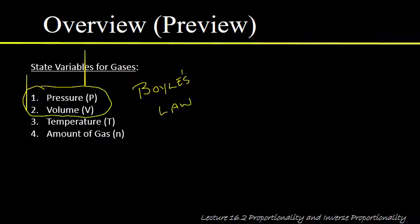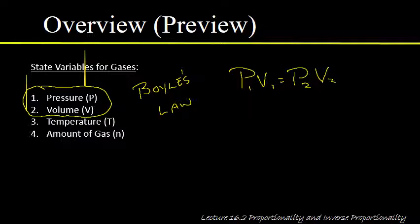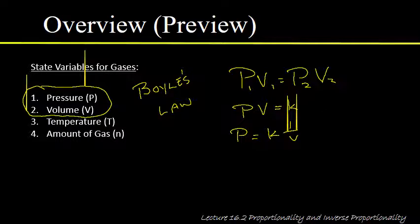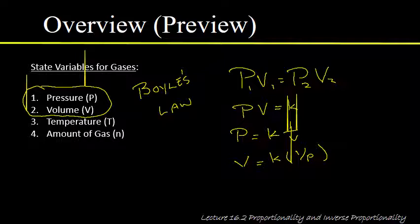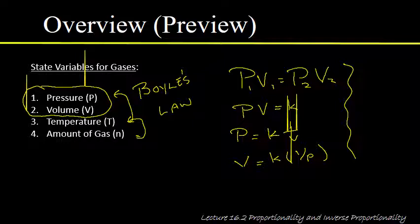If you look in textbooks or online for Boyle's law, you'll find the relationship between pressure and volume written in a whole bunch of different ways. Common forms include p1v1 = p2v2, pv = k, or p = k times 1/v. The same is true for all other pairs of variables — there are many different ways to write each relationship.